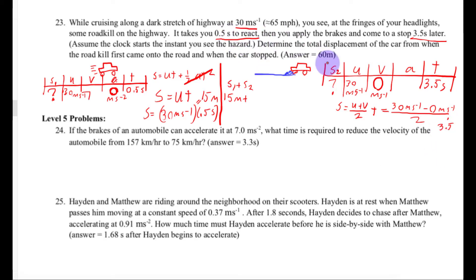So it looks like I actually made a mistake with this answer. So when I calculate this out, S2 is going to be equal to 52.5 meters. So the total displacement that you traveled is going to be 15 plus 52.5, which is going to be 67.5 meters.